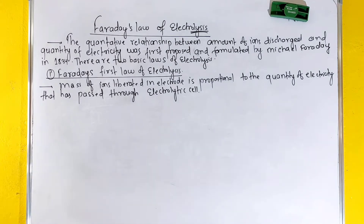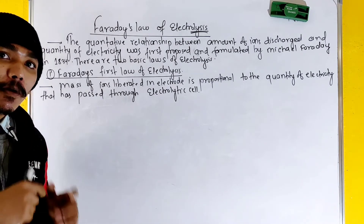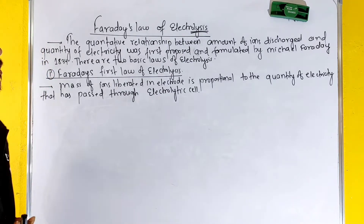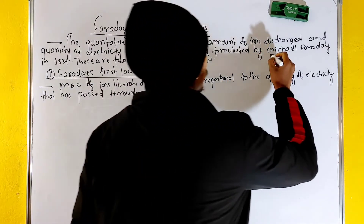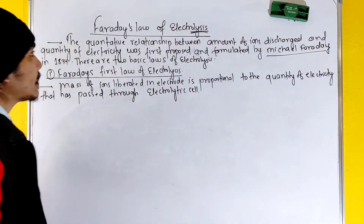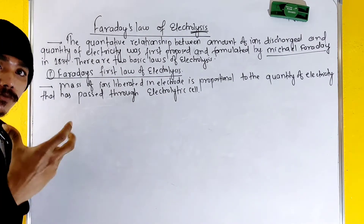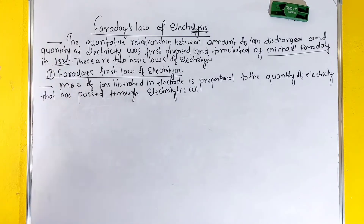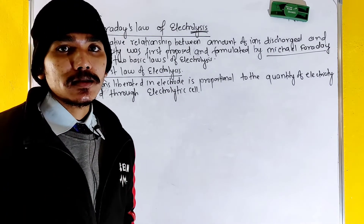The quantitative relationship between the amount of ion discharged and the quantity of electricity was first proposed and formulated by Michael Faraday, a scientist. Faraday's law of electrolysis was formulated in 1834. There are two basic laws: Faraday's first law of electrolysis and Faraday's second law of electrolysis.